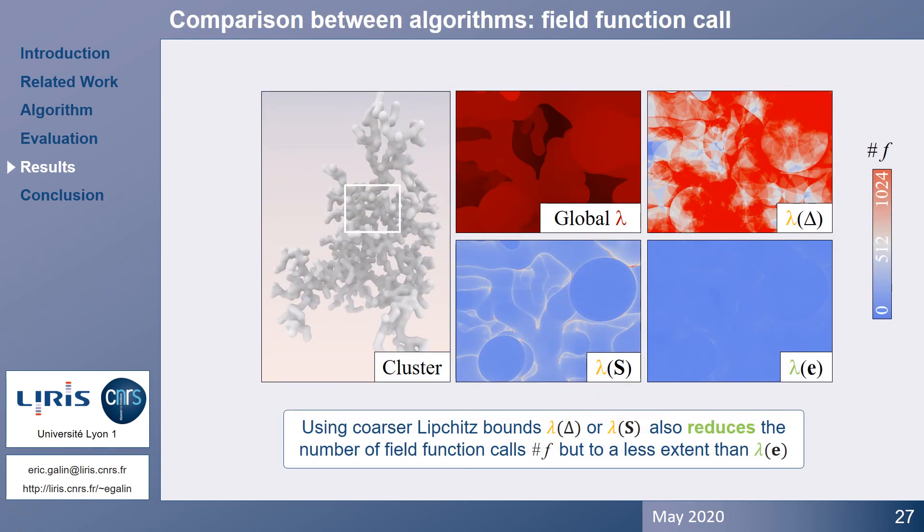Here we showed again in terms of field function calls for different local Lipschitz bound strategies, along a ray, in a sphere, and over the candidate segment itself. Coarser Lipschitz bound over the ray, or the sphere, also reduced the number of field function calls, but to a lesser extent. Still, as we mentioned earlier, we may need to adapt the local Lipschitz evaluation on the fly when traversing the tree, depending on the type of node.